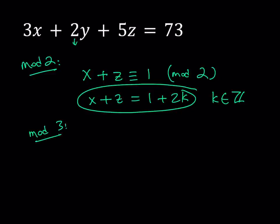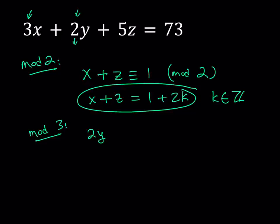The reason why I picked mod 2 and mod 3 is because of these coefficients. You might be wondering, why do I not use mod 5? You could. I mean, there's nothing wrong with that. So if I use mod 3, obviously x disappears and then I get 2y. 2y and then 5z becomes 2z. And this 73 is going to be mod 3 because 72 is divisible by 3. That's going to be 1 mod 3.